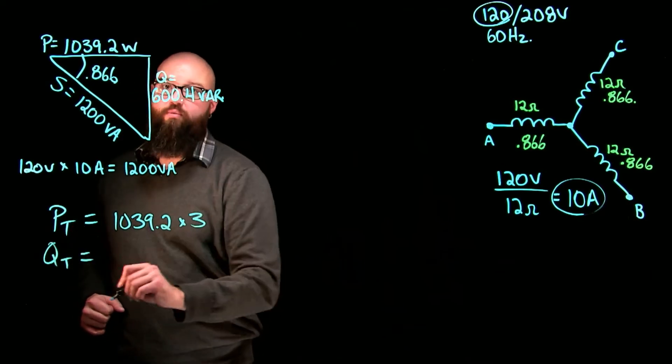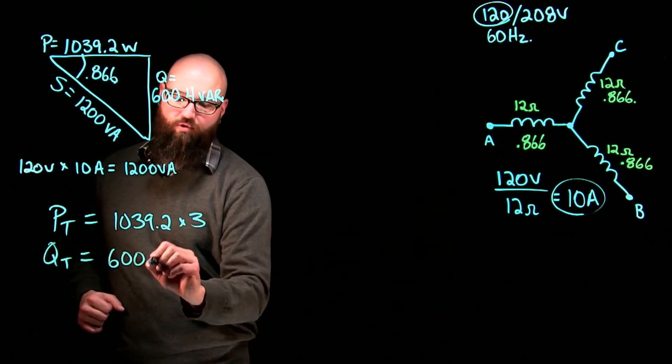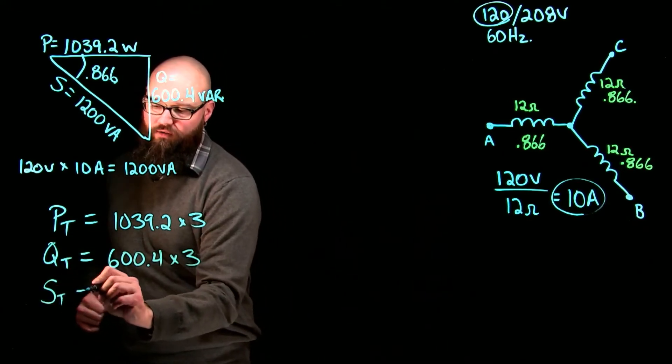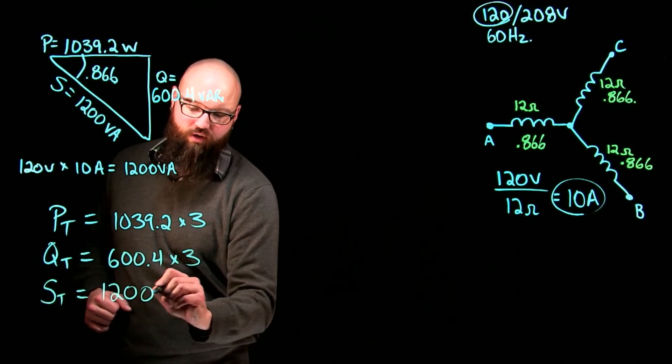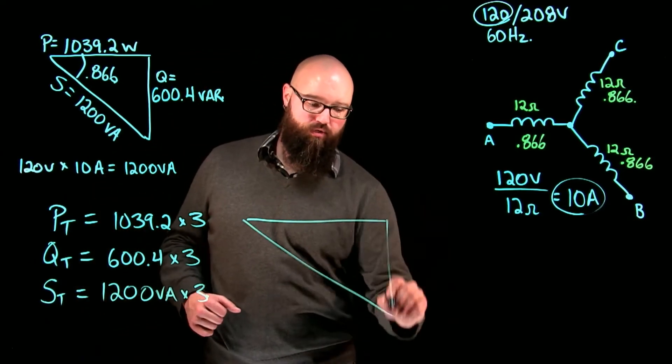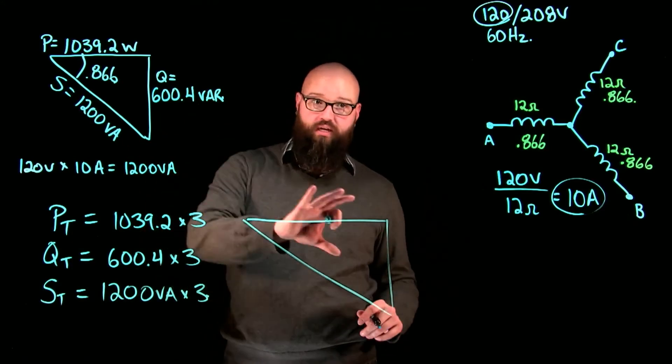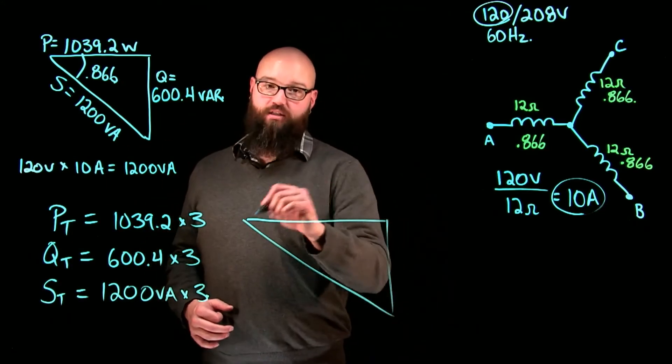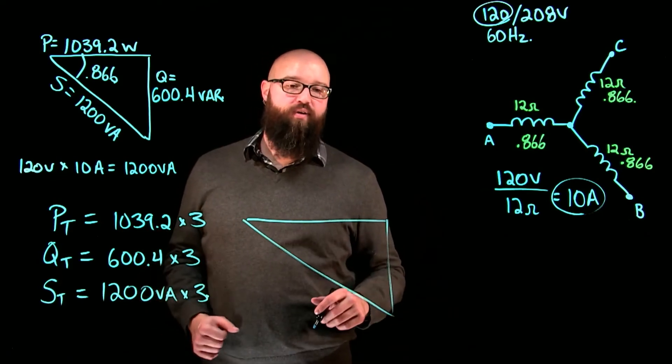Q total equals 600.4 times 3 and apparent power 1200 VA times 3. We end up with a new circuit triangle that should be exactly the same shape, the same power factor as my individual phase.